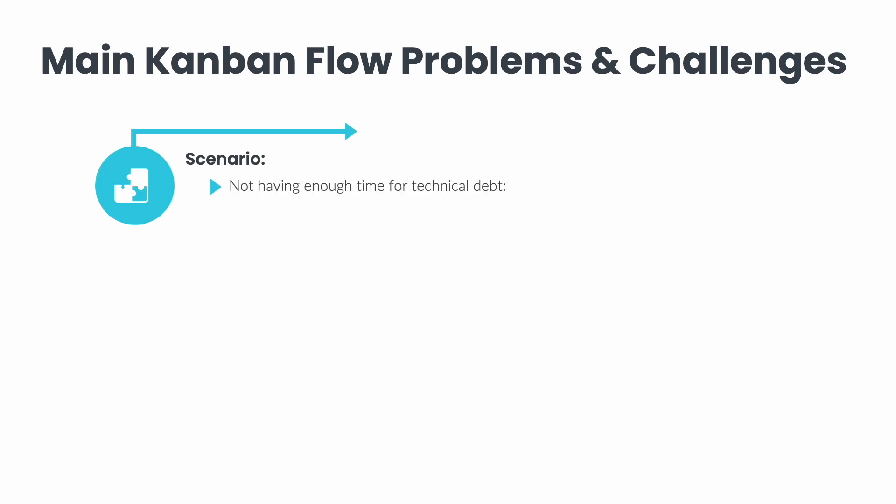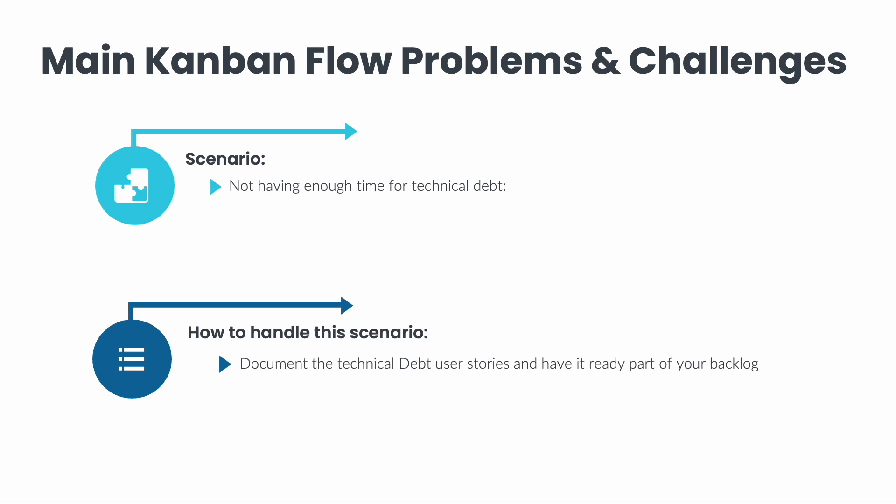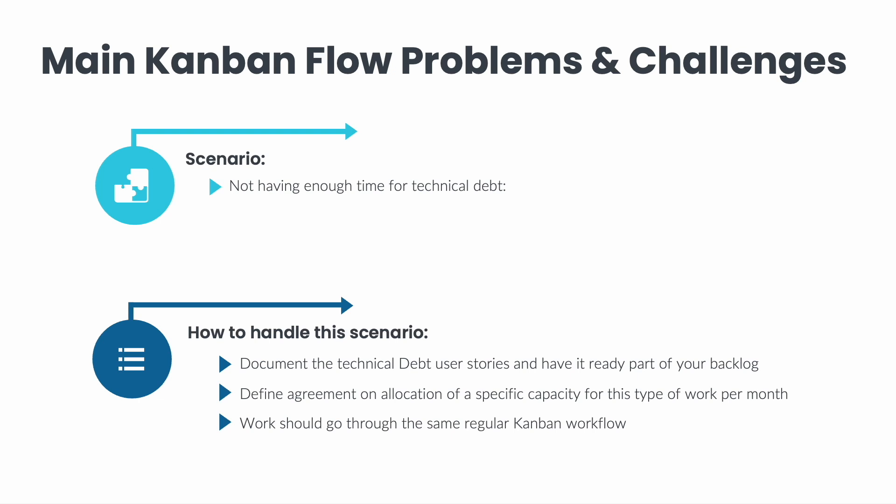A common challenge for tech teams is not having enough time for technical debt. These could be things like system or tool improvements, maintenance of current systems, transitioning from one tool to another, or automation. Most tech teams approach this work with the idea that they'll get to it when they have more time, but in reality that time never comes due to higher business priorities. The best way to handle this is to document it in user stories and have it in your backlog just like all other work. Have a team discussion and agree on allocation of a specific capacity for this type of work per month — include management in that conversation. Run this work through the same regular Kanban workflow, and use a class of service like the intangible class to track it and ensure the agreed capacity is respected.